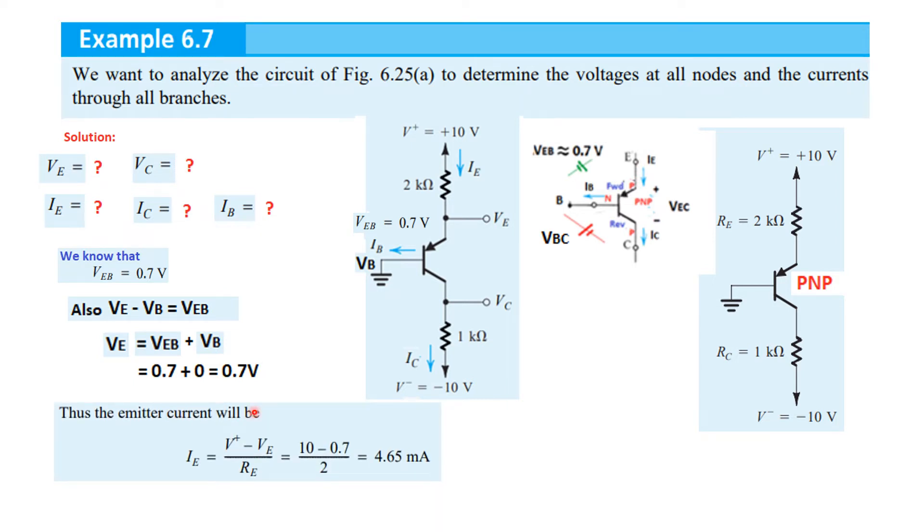And now, we can calculate the emitter current. Now that we know this is 0.7, 10 minus 0.7 divided by this resistance. 10 minus 0.7 divided by 2 is 4.65 milliampere. This is the emitter current. So, one parameter we have found here and the other parameter we have found VE.